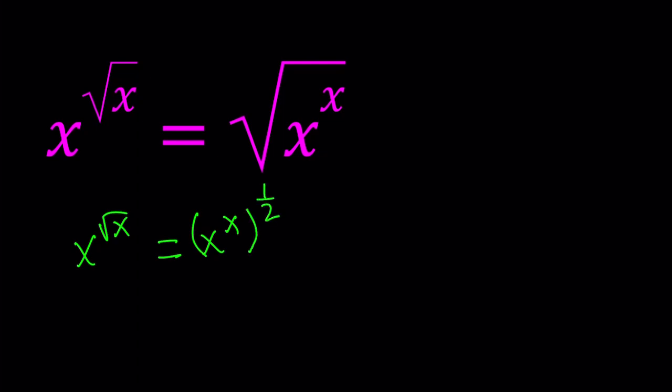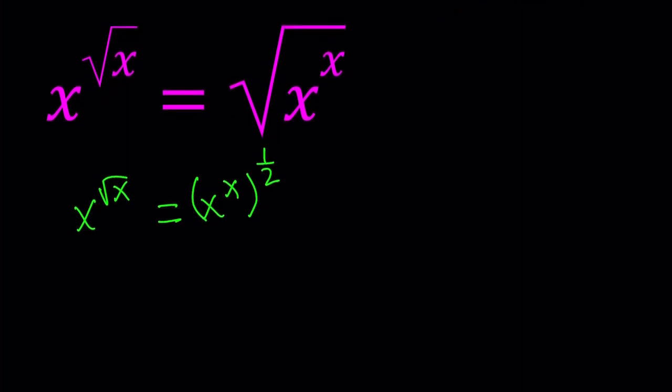Because when you raise something to the power of 1 half, you take the square root. If you multiply it by itself, you get the original number, because 1 half plus 1 half is equal to 1. x to the power of 1 half times x to the power of 1 half is equal to x. But of course, x needs to be positive in this case.